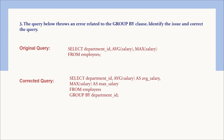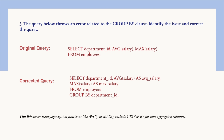Whenever you use aggregation functions like AVG, MAX, MIN, or any aggregate, you must include GROUP BY for non-aggregated columns. The corrected query simply applies GROUP BY on the non-aggregated column, which is department_id. Tip: whenever using aggregation functions, include GROUP BY for non-aggregated columns.